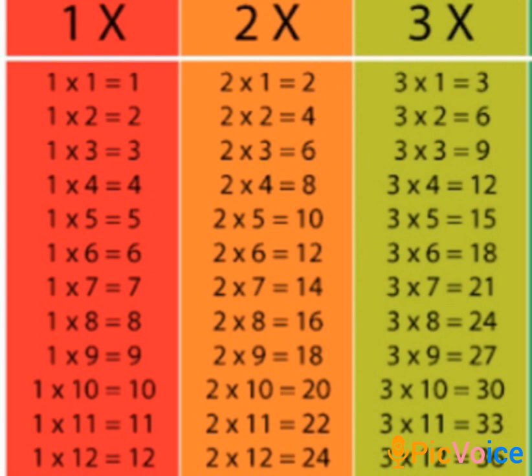Then table of 2: 2 1s are 2, 2 2s are 4, 2 3s are 6, 2 4s are 8, 2 5s are 10, 2 6s are 12, 2 7s are 14, 2 8s are 16, 2 9s are 18, 2 10s are 20, 2 11s are 22, 2 12s are 24.